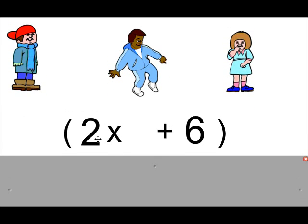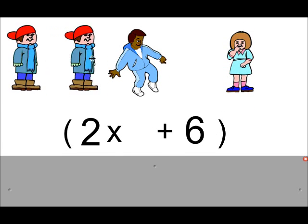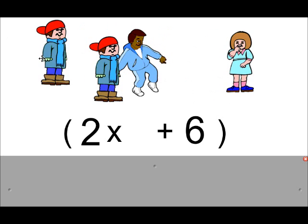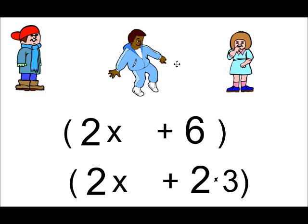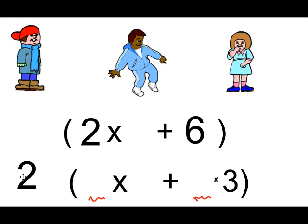With numbers, it might look like there's nothing in common at first. But we can say that 6 is actually 2 times 3. Now we see there is something in common — there's a 2. That means we can take the 2 out, and the factored form is 2 times 3.